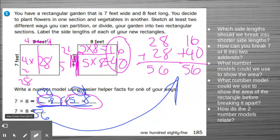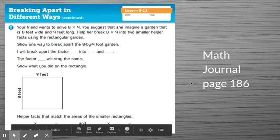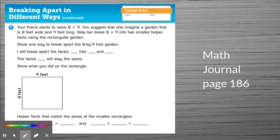Let's look at another one. So this is number 2 on page 186. And it says, your friend wants to solve 8 times 9. You suggest that she imagine a garden that is 8 feet wide and 9 feet long. Help her break 8 and 9 into 2 smaller helper facts. Using the rectangular garden. All right, so we have to decide, do we want to break the 8 or do we want to break the 9? And I think I want to break the 8. I know that I could break it in half, but I'm going to try something different. So one way to break apart the 8 by 9 foot garden, I will break apart the factor I'm picking 8.